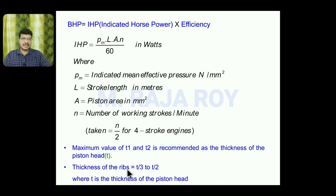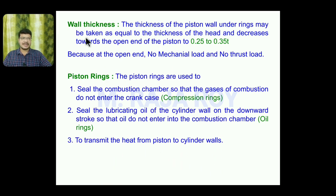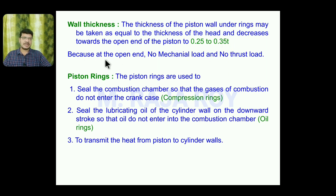For wall thickness, the thickness of the piston wall under the rings may be taken as equal to the thickness of the piston head T, and it decreases towards the open end of the piston. At the open end, the thickness is taken as 0.25 to 0.35 times the piston head thickness, because at the open end there is no mechanical loading and no thrust.